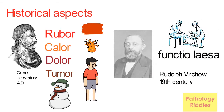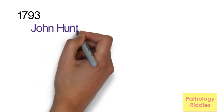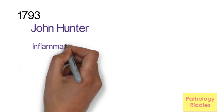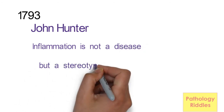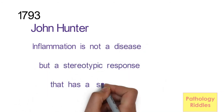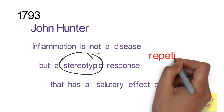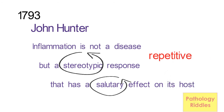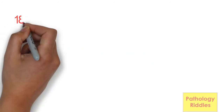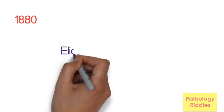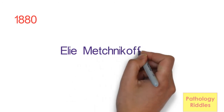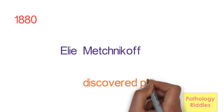In the 19th century, Rudolf Virchow added 'functio laesa' which means loss of function. These five signs are the hallmark of acute inflammation. In 1793, a Scottish surgeon John Hunter noted that inflammation is not a disease but a stereotypic — meaning repetitive — response that has a salutary, meaning beneficial, effect on its host. In 1880, a Russian biologist Eli Mechnikov discovered the process of phagocytosis.